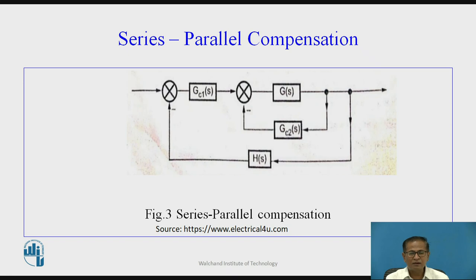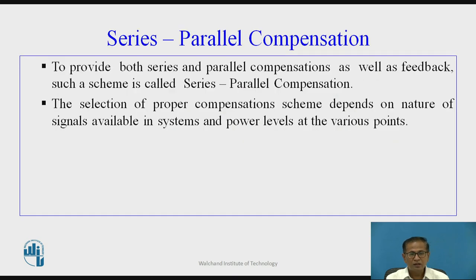This is the block diagram of the series-parallel compensation. Here, Gc(s) is the transfer function of the series compensator and Gc(s) is the transfer function of the parallel compensator. To provide both series as well as parallel compensation and feedback, such a scheme is used and is called series-parallel compensation. The selection of the proper compensation scheme depends on the nature of signals available in the system and power levels at various points.